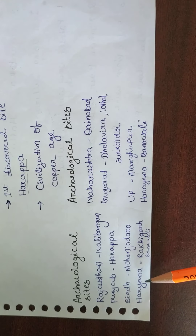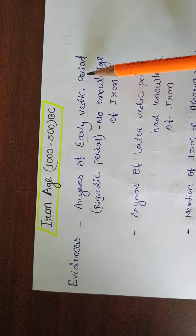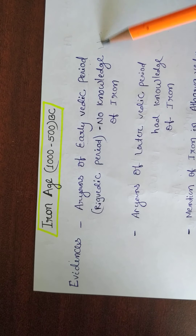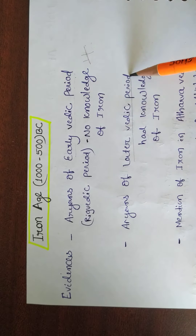Now we'll read about the Iron Age. The time period of the Iron Age is 1000 to 500 BC. In the Early Vedic Period, there was no knowledge of iron. In the Later Vedic Period, there was knowledge about iron. In the Atharva Veda and in Buddhist texts, iron is also mentioned.